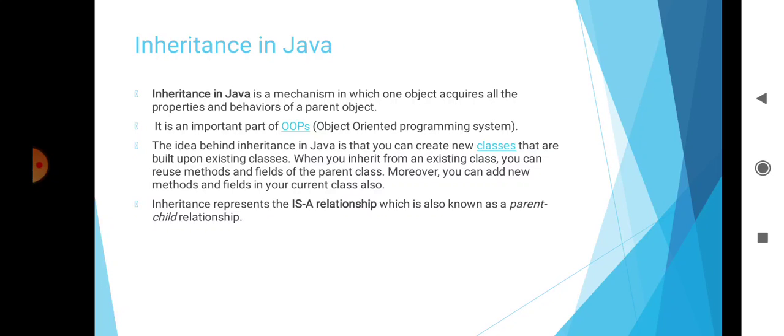Inheritance allows us to create hierarchical classification. Using inheritance, a class can be inherited by another class. The base class is called the superclass and the inherited class is called the subclass. It is an important part of object-oriented programming systems.